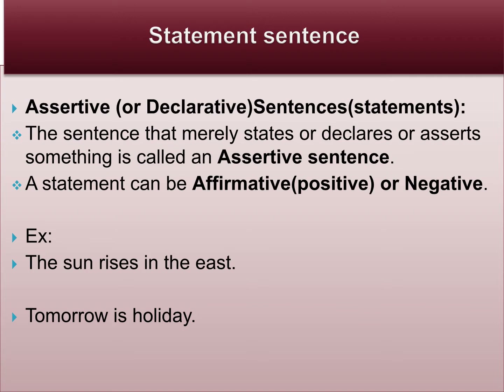The sentence that merely states, declares, or asserts something is called an assertive sentence. A statement can be affirmative or negative. Assertive sentences are otherwise called declarative sentences. Declarative means to declare — these sentences declare some news, announcement, or give some message. For example, look at the first sentence: 'The sun rises in the east.' In this sentence, a universal truth is declared.